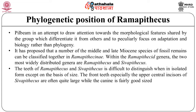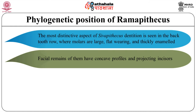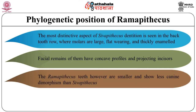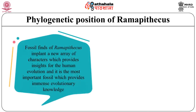The front teeth, especially the upper central incisors of Sivapithecus, are often quite large while the canines are fairly good-sized. The most distinctive aspect of Sivapithecus dentition is seen in the back tooth row, where the molars are large, flat-wearing, and thick-enameled. The facial remains have a concave profile and projecting incisors. However, the Ramapithecus teeth show less canine dimorphism than Sivapithecus. It is considered that the fossil finds of Ramapithecus implant a new array of characters which provide insight for human evolution.